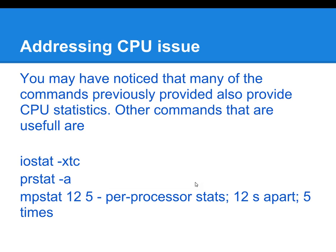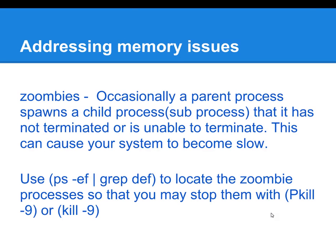For CPU statistics: iostat -xtc adds an extra column showing user CPU usage, system CPU usage, and CPU idle time. prstat -a shows per-process stats. mpstat 12 5 gives you processor statistics every 12 seconds, five times. Regarding zombies — these are orphan processes. Run ps -ef, grep for defunct processes to locate them, then kill them with pkill -9 or kill -9, depending on whether you use the process name or process ID.